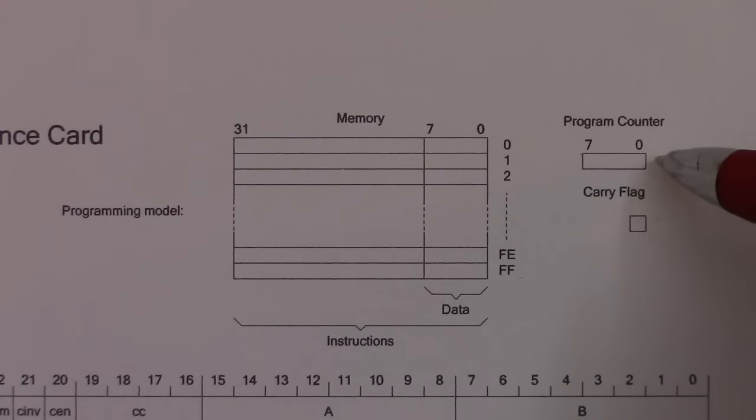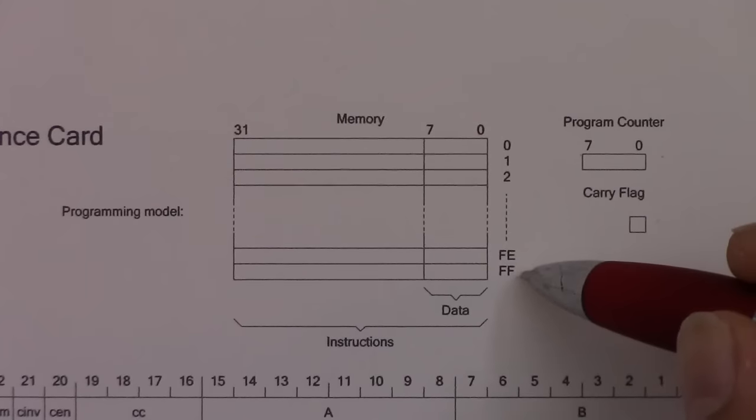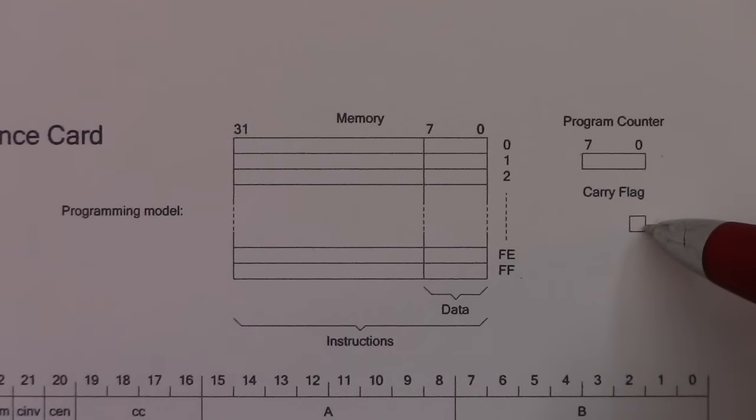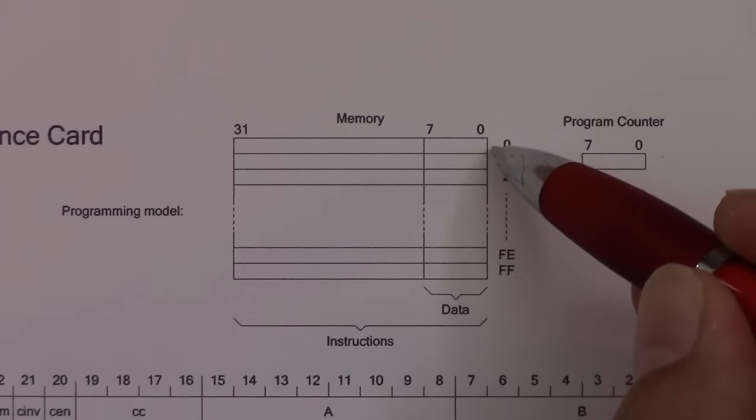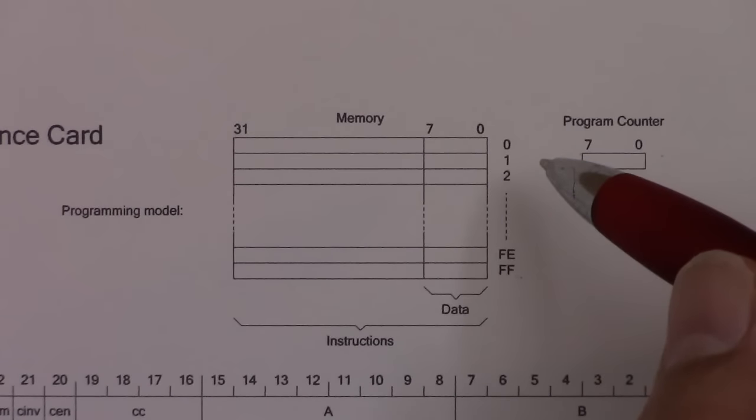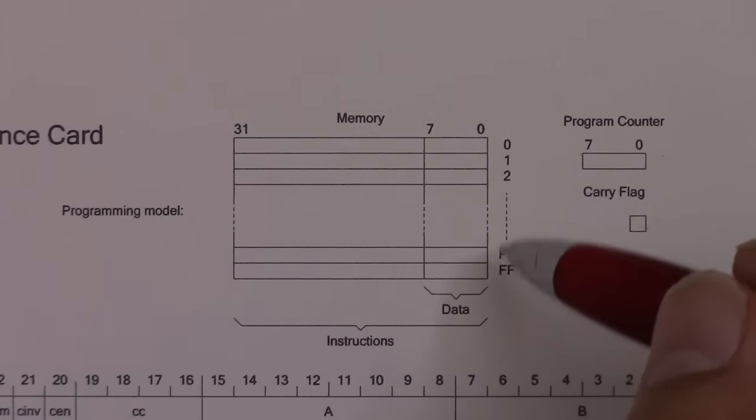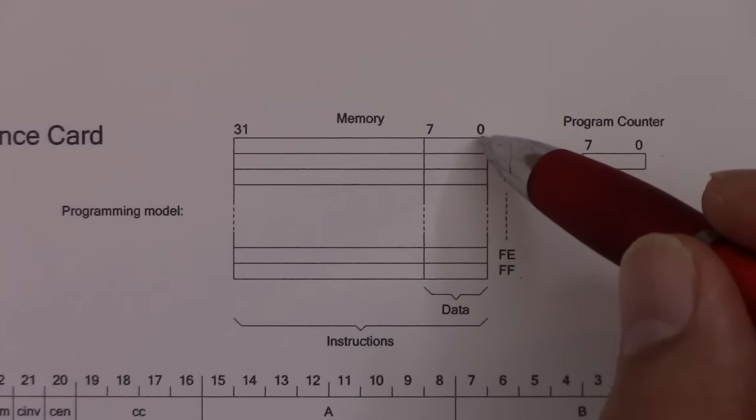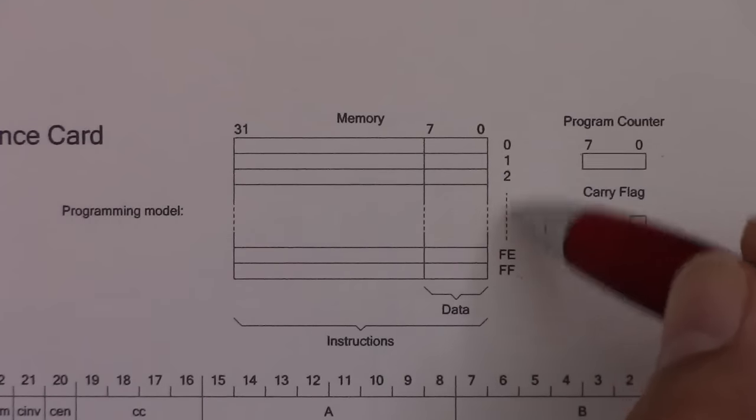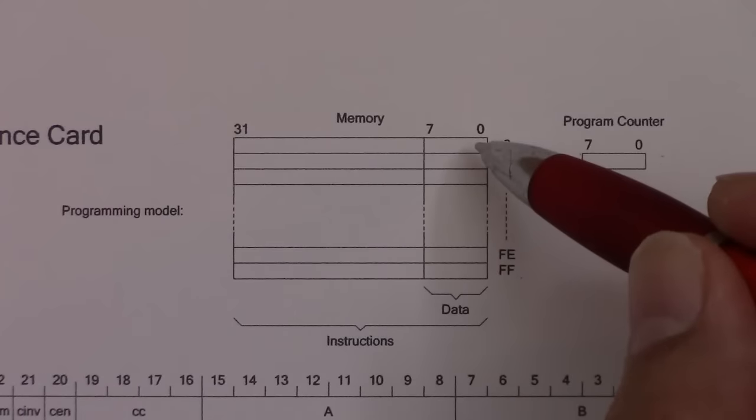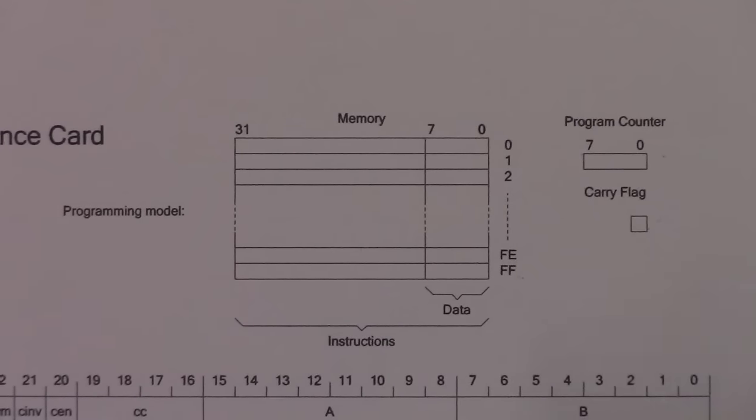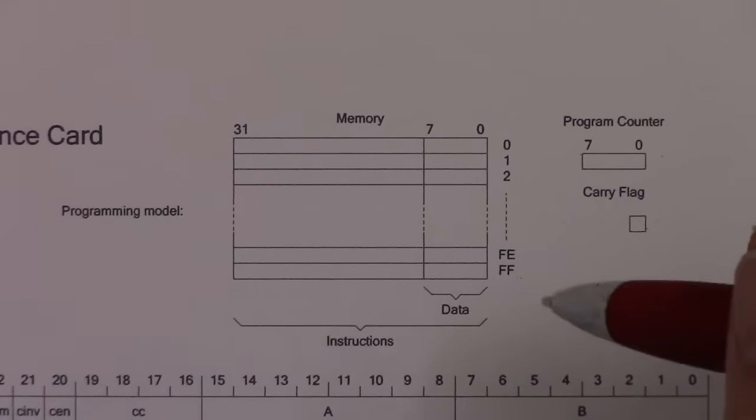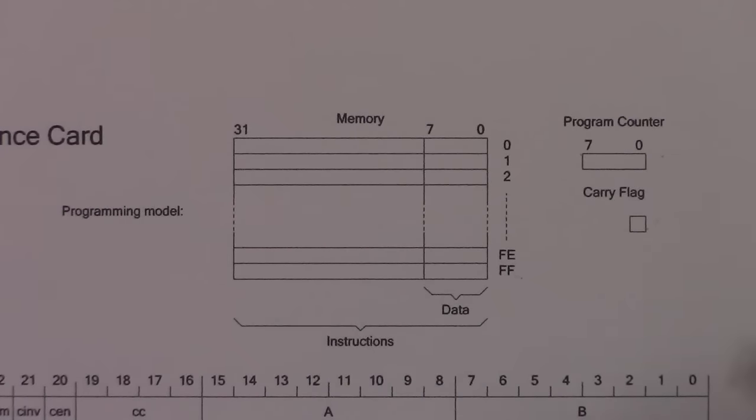We have an 8-bit program counter. We have 256 memory locations. And we have a carry flag. Now I have to explain each memory location has 32 bits for an instruction. But the Relay computer can also read and write data to this memory. But it gets to read and write only the lower 8-bits of each of the memory locations. Now those 8-bits correspond to one of the instruction operand fields. And the reason for that is it allows you to make self-modifying code, which we definitely take advantage of in the Relay computer to simplify the computer.